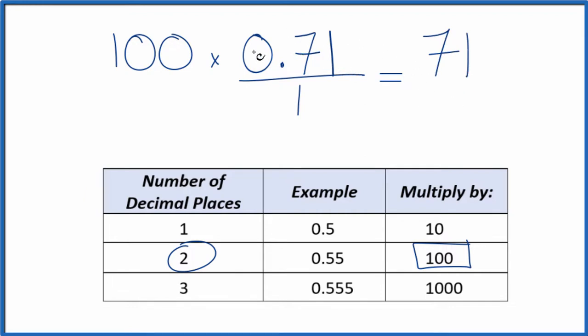But I can't just multiply the numerator here by 100. I also need to multiply the denominator by 100. That's because 100 divided by 100, it's just 1. We're multiplying by 1. Again, we don't change the value, just we end up with a different representation.